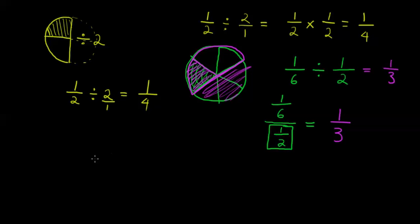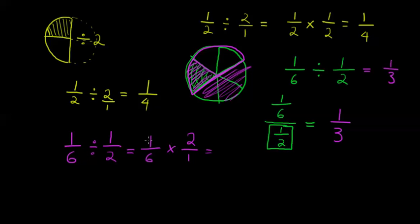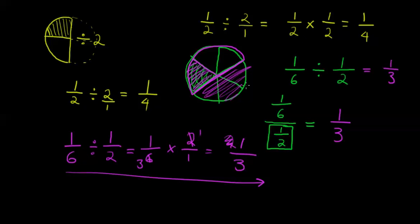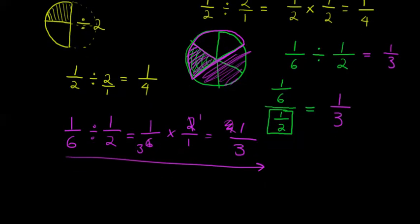To divide is the same as to multiply by the reciprocal. So dividing by one half is the same as multiplying by two over one. We should first cancel common factors — two goes into itself once and into six three times — so one times one is one and three times one is three. We still get the same answer of one third.